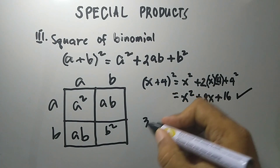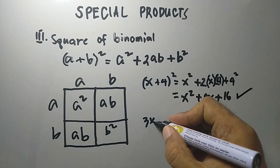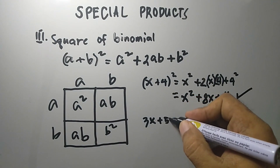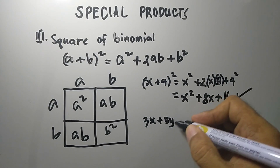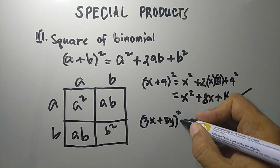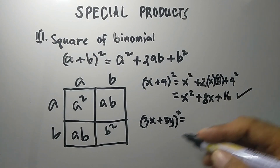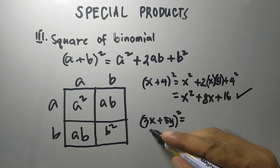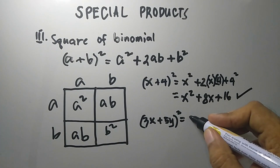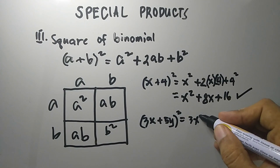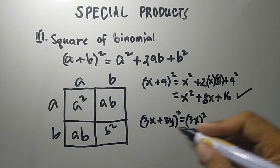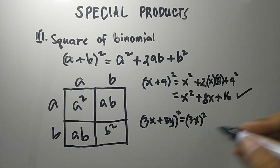Another example: we have (3x plus 5y) squared. We get the square of the first term, 3x, and the square of the last term, 5y.